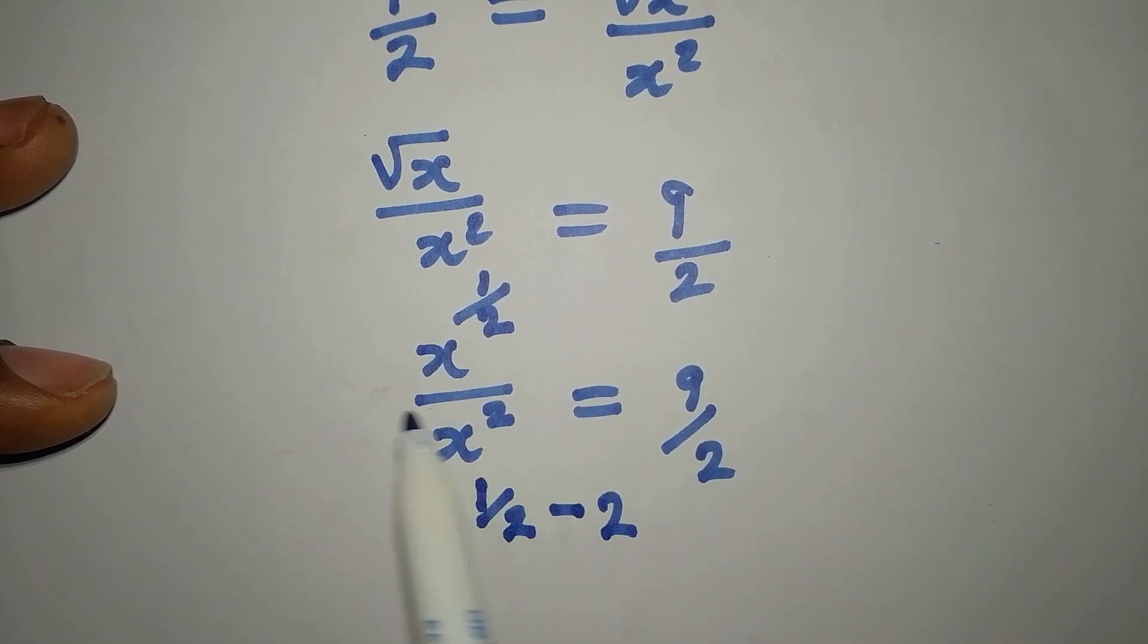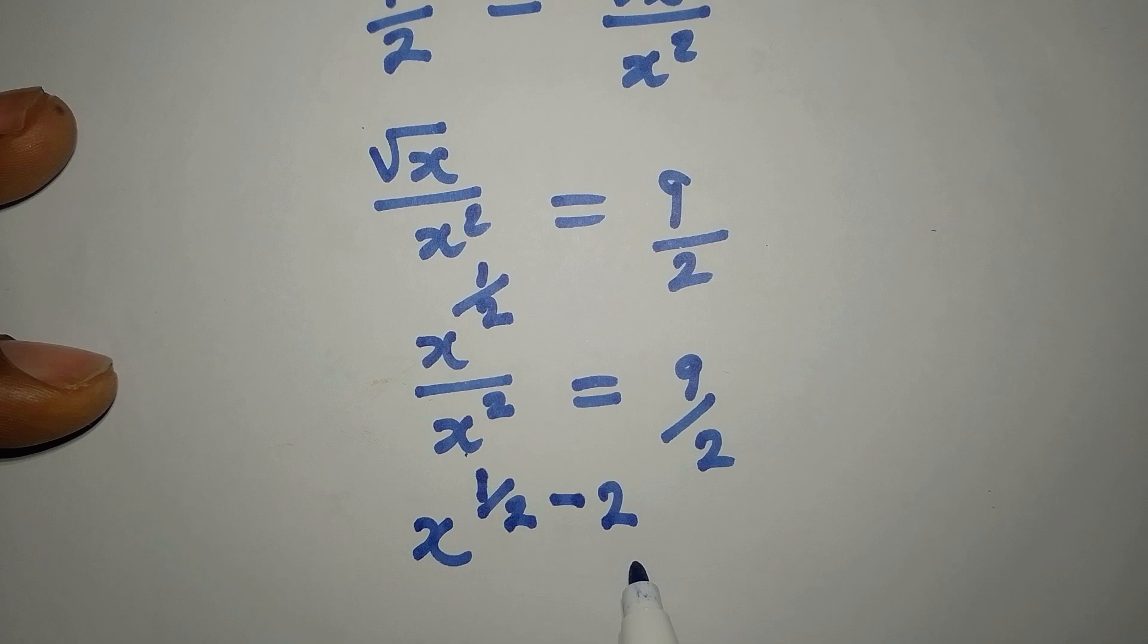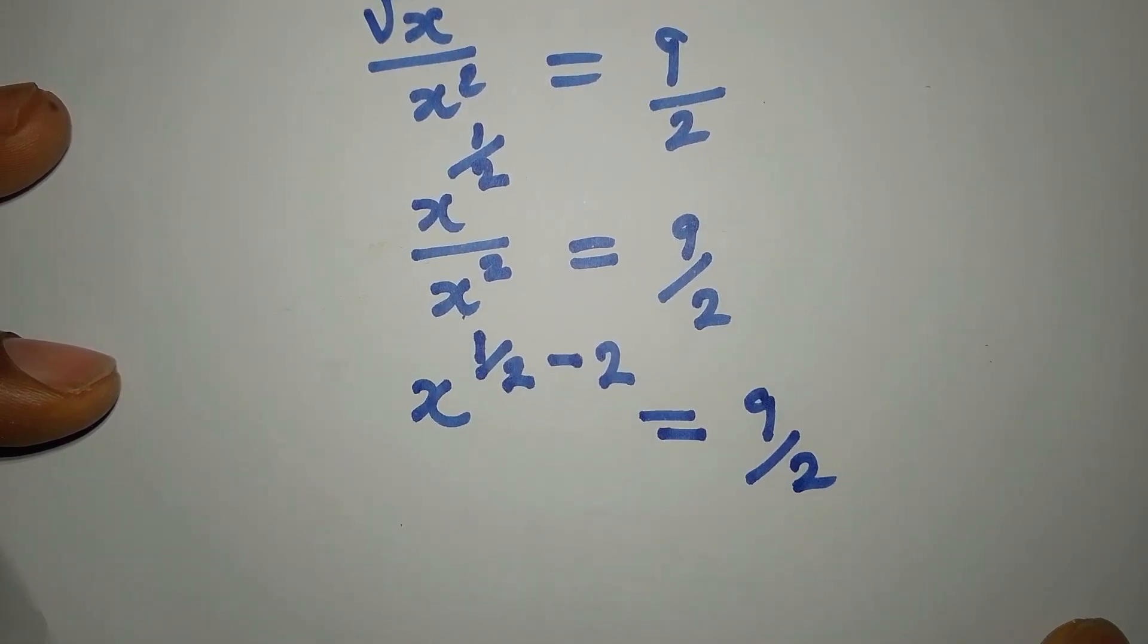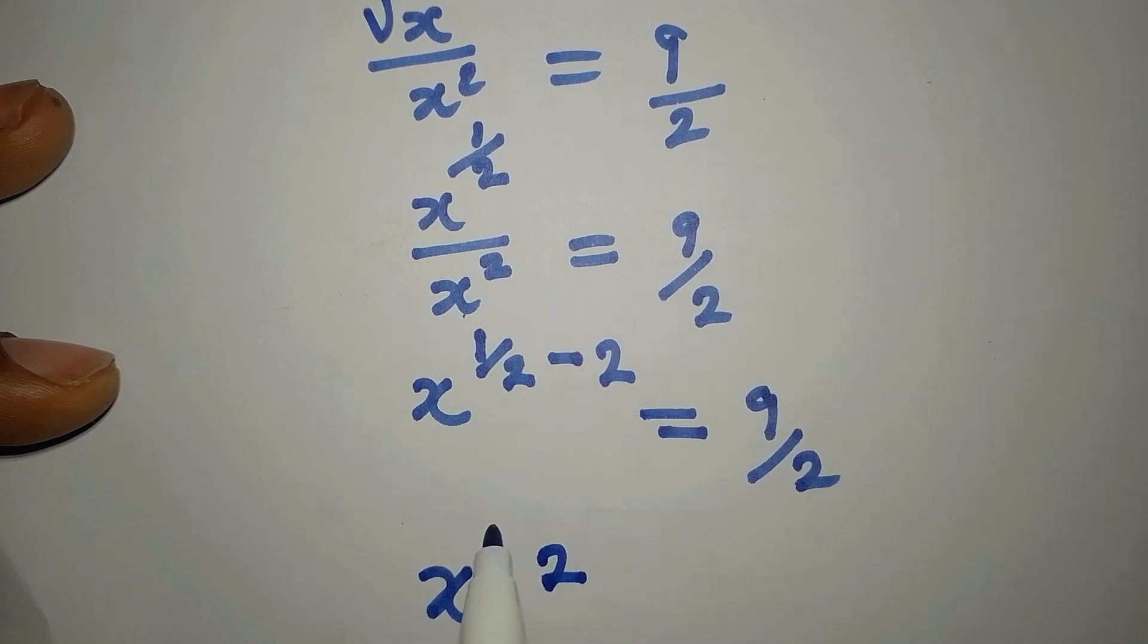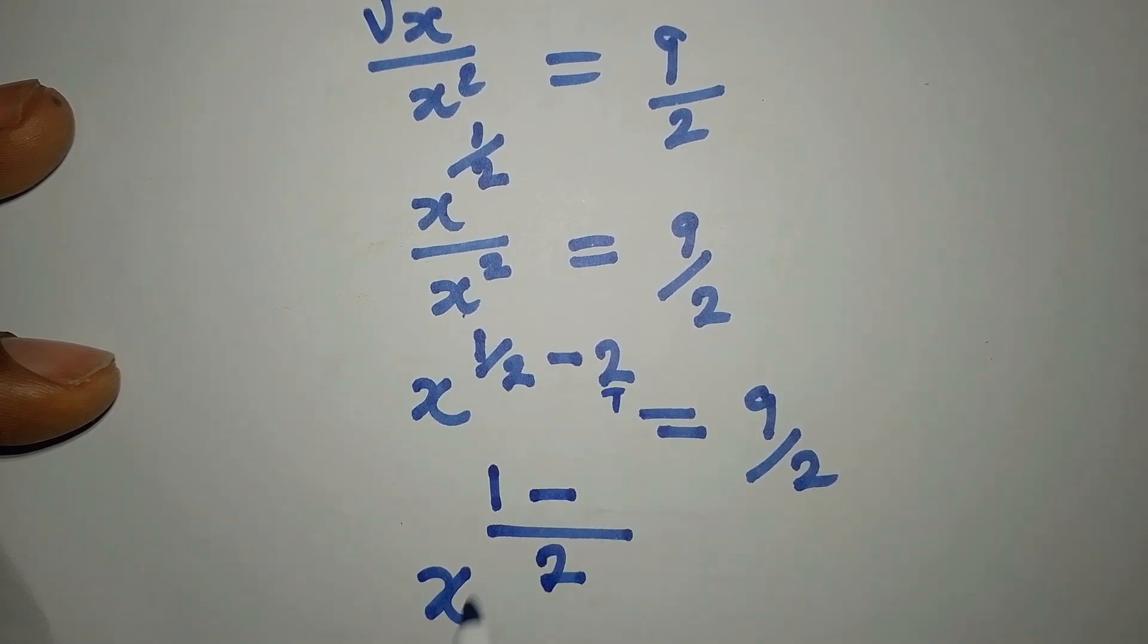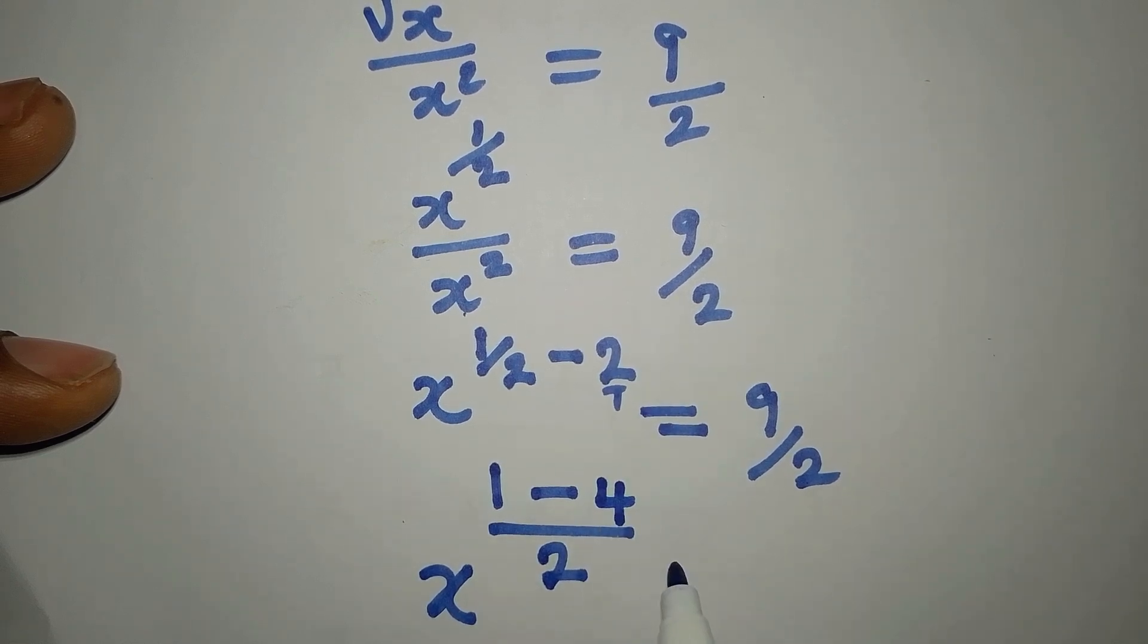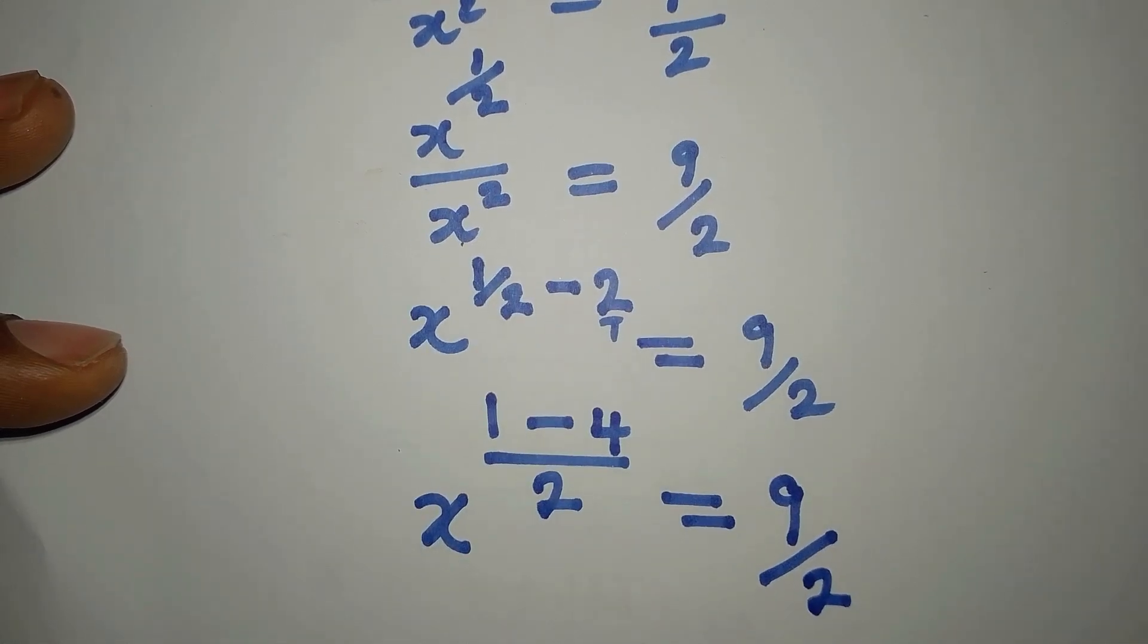we are dividing the two of them, right? So if you pick one of the bases, you will subtract if it is division. This is equal to 9/2. We have our x, the LCM of the power is 2, then 2 divided by 2 is 1, 1 times 1 is 1 minus 2 over 1, so 2 divided by 1 is 2 times 2, that would be 4. So x^(-3/2) = 9/2.